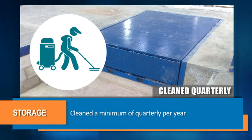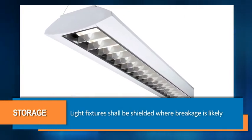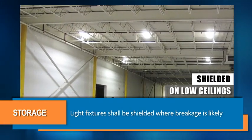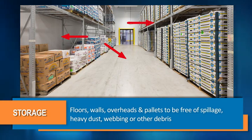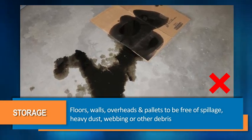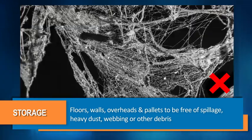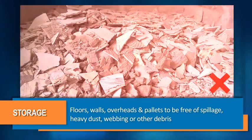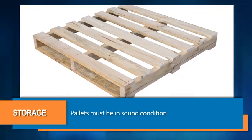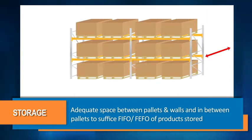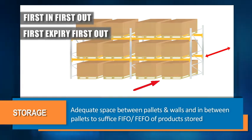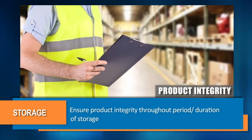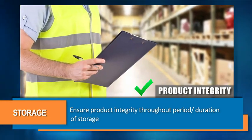Dock levelers must be well maintained and inspected monthly, and cleaned a minimum of quarterly per year. Light fixtures shall be shielded where breakage is likely, for example on low ceilings, rail and trailer inspection lights. Floors, walls, overheads and pallets shall be free of spillage, heavy dust, webbing or other debris. Pallets must be in sound condition, and adequate space must be maintained between pallets and walls, and between pallets, to facilitate first-in-first-out or first-expiry-first-out movement. Product integrity must be maintained throughout the storage period.